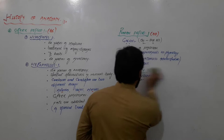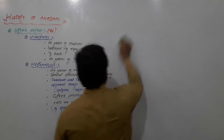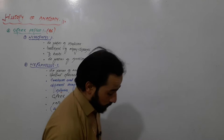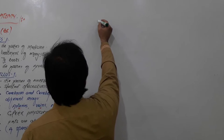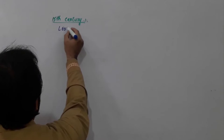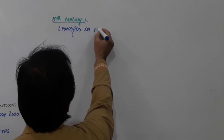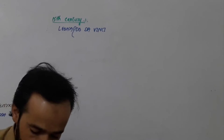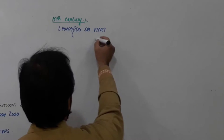Hello dear friends, welcome back. Let's move further forward and discuss the next discoveries in the field of anatomy. We have discussed up to the 14th century. Now we are discussing the 15th century. In the 15th century, there was a famous person known as Leonardo da Vinci, and he started his very famous work in the field of anatomy.